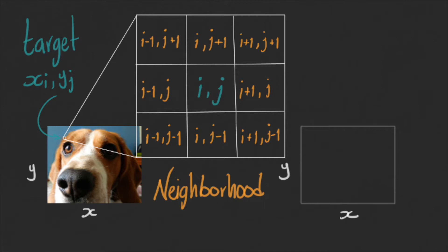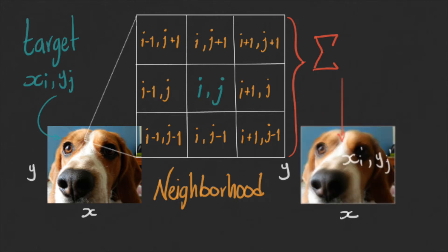Apply some weighted sum on those values, then write out the results in the new target location of the new image, and finally apply the same operation to each pixel of the original image.